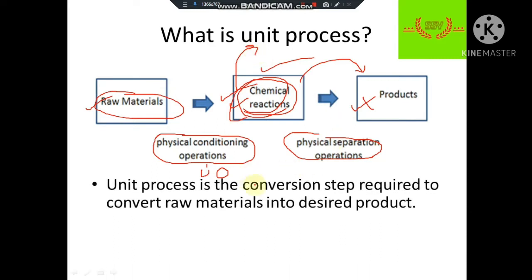The chemical reaction step is the main step for product formation, and this step is known as unit processes. A unit process is the conversion step required to convert raw material into the desired product — that is, conversion of raw material to product using chemical reaction or by doing some chemical changes. Whenever you are asked in interviews, your statement should be: the step which is required to convert the chemical properties of any substance to get some other substance or to enhance the property.